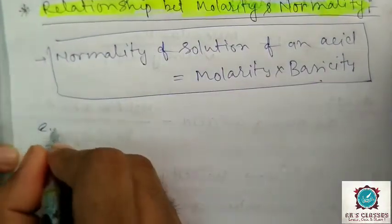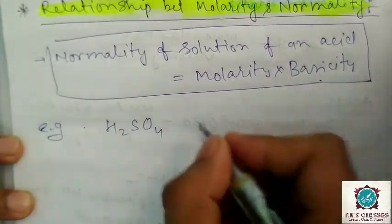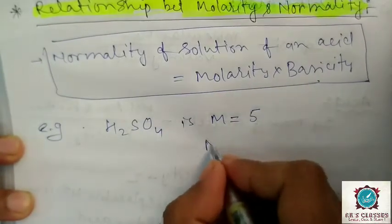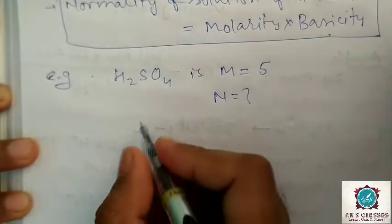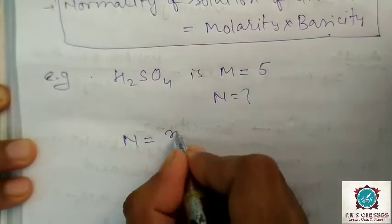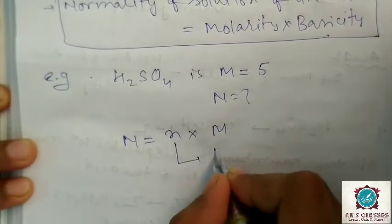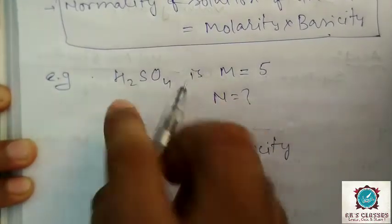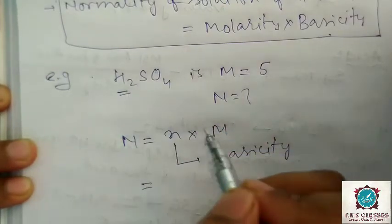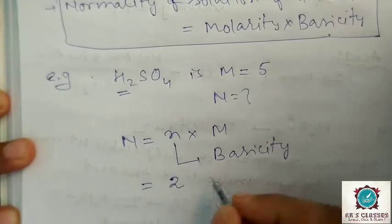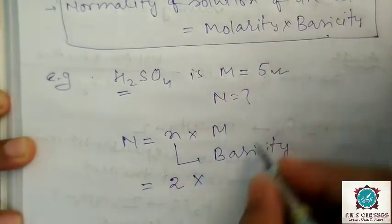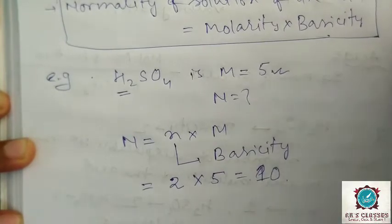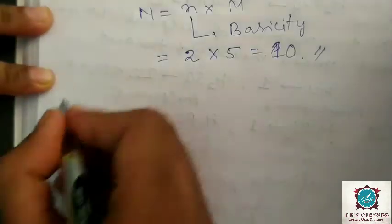Let's take an example: H₂SO₄ with molarity 5. The formula is N = n × M, where n is the basicity for an acid. The basicity of H₂SO₄ is 2, and the given molarity is 5, so the normality will be 10 normal. Very easy!